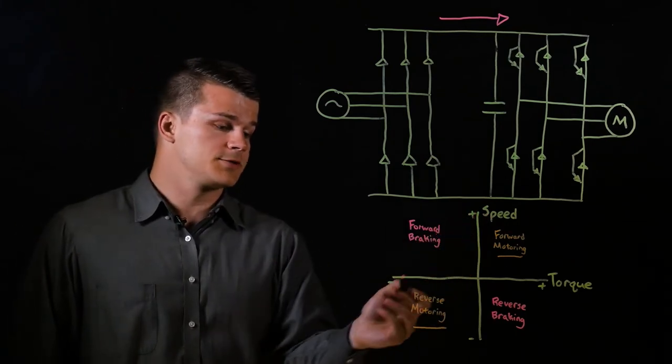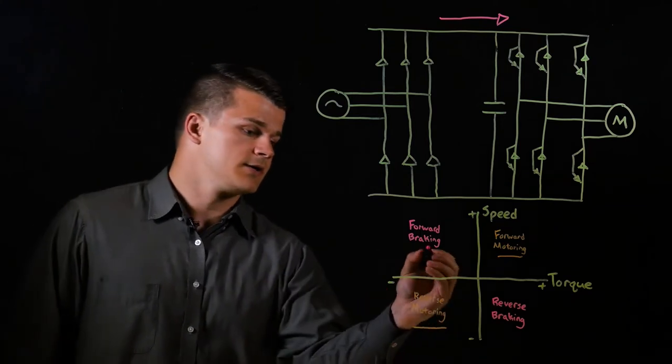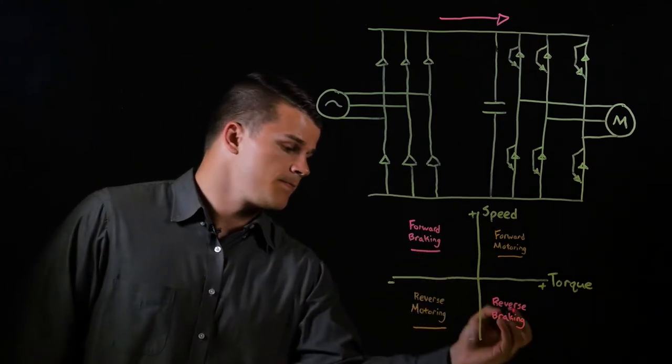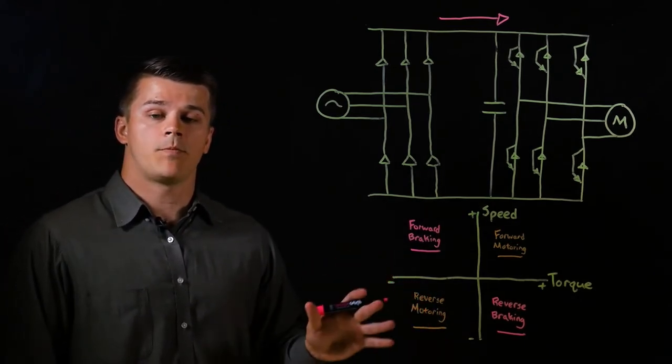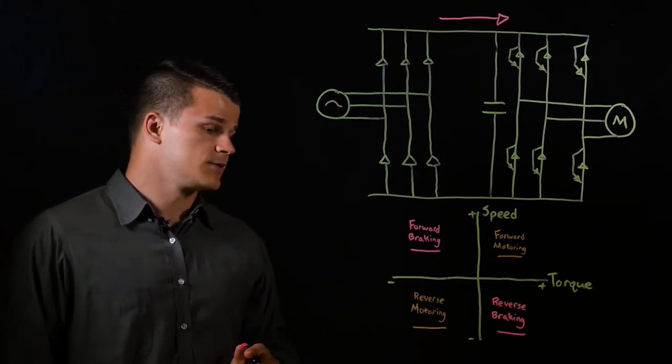If the speed of the motor is in the opposite direction of the torque applied, it's in a generating operation and takes a mechanical input of energy at the motor shaft and produces an output of electrical energy back towards the VFD.